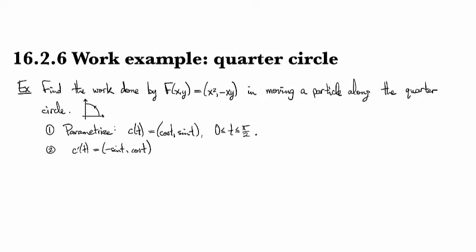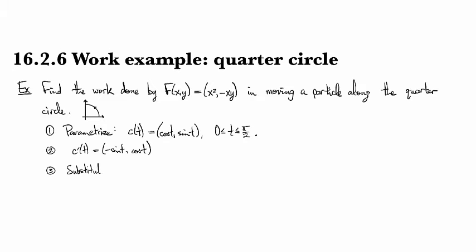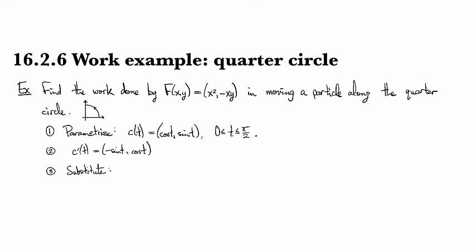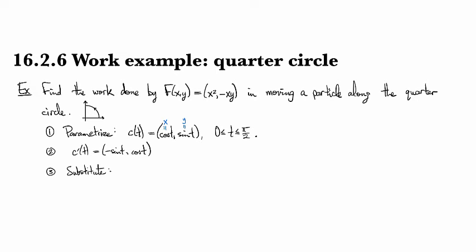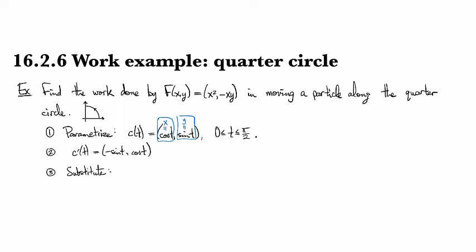And now I can use that to substitute my parametrization into the integral. I'm going to be using x equals x of t and y equals y of t. Those are the two substitutions I need to make into my vector field.